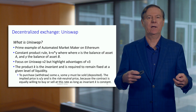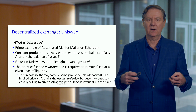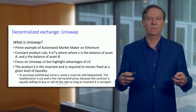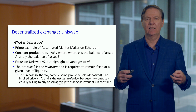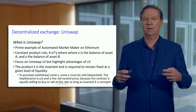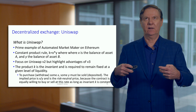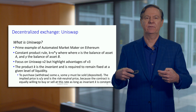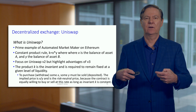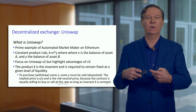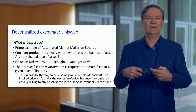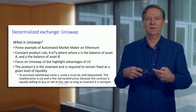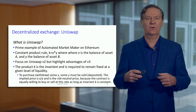The example used in the previous course used a constant product rule. We had 10 ether and 1,000 USDC. The key was to multiply those two together and we got 10,000. That product is something that will be fixed by the algorithm — K is going to be fixed.